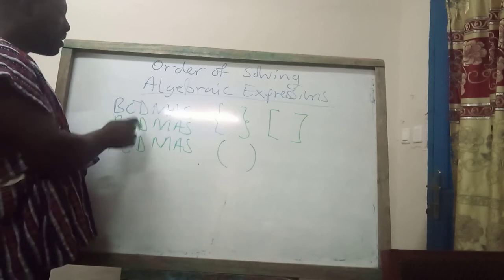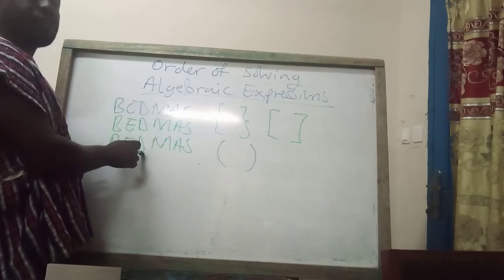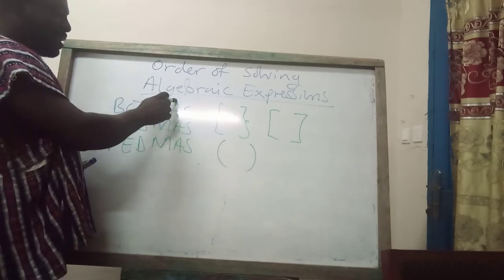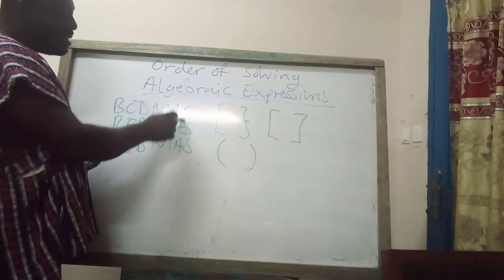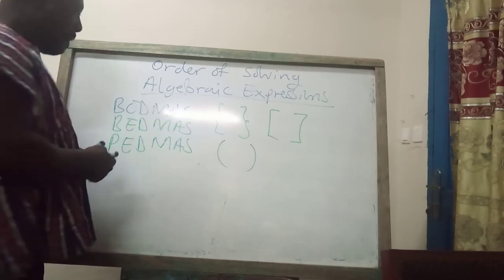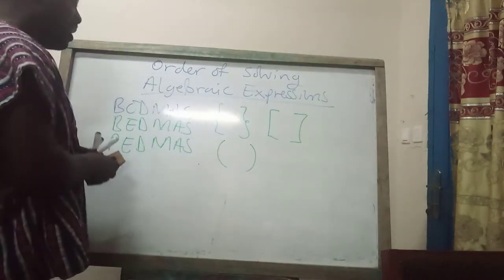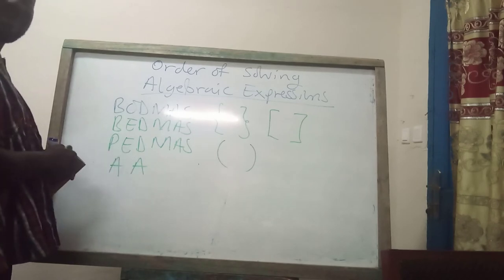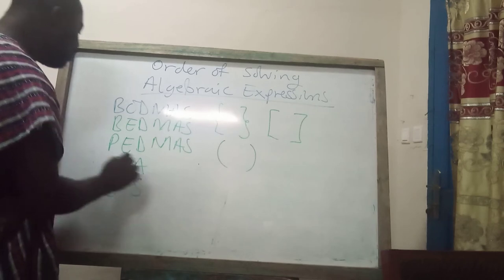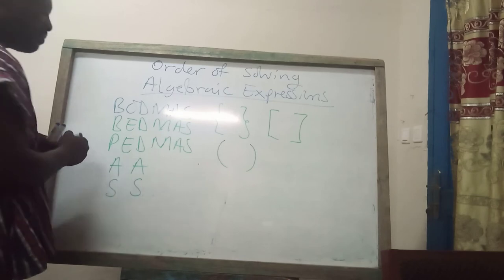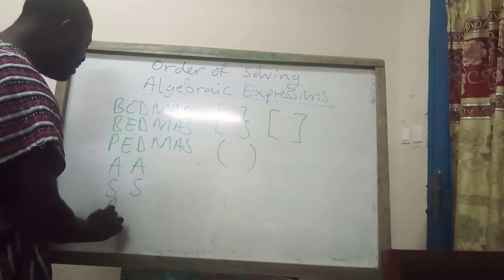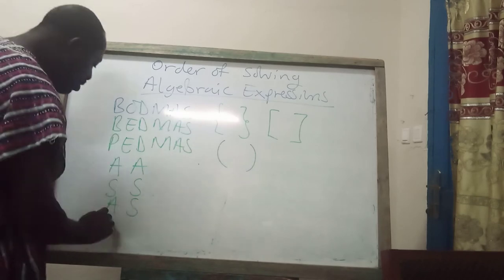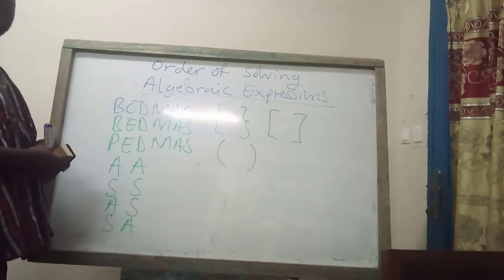After removing the brackets, the next thing is division — if there is division, you work it. After that, check if there is multiplication and work it out. Then if there is addition, work it out, and later if there is subtraction, work it out. When only addition remains, work it from left to right. When only subtraction remains, work it from left to right. When it is addition and subtraction together, whichever comes first from left to right must be worked first. If subtraction comes first, do that before the addition.